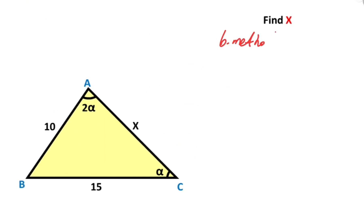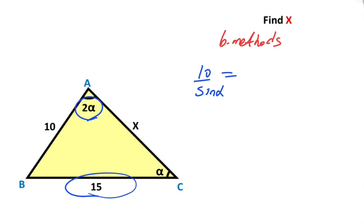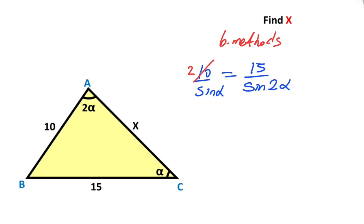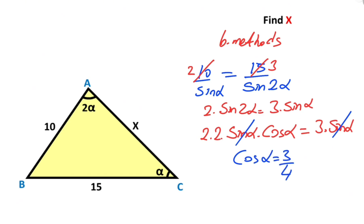Let's calculate the value of X using the sixth method. For this triangle, if we apply the sine rule: 10 over sine alpha must equal 15 over sine 2-alpha. Simplifying: 2 times sine 2-alpha equals 3 times sine alpha. Since sine 2-alpha equals 2 times sine alpha times cosine alpha, we get 4 sine alpha cosine alpha equals 3 sine alpha. Simplifying, cosine alpha equals 3 over 4.